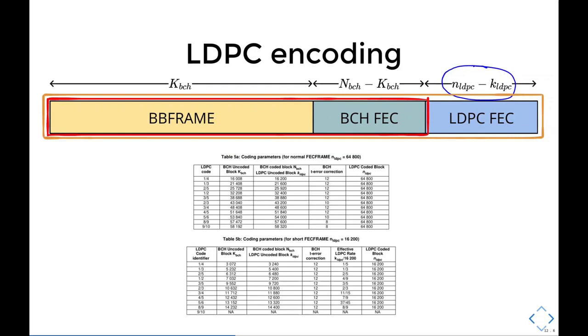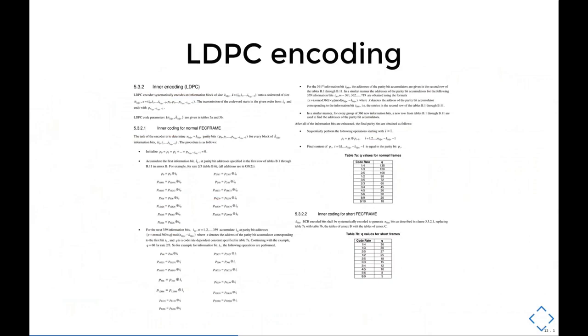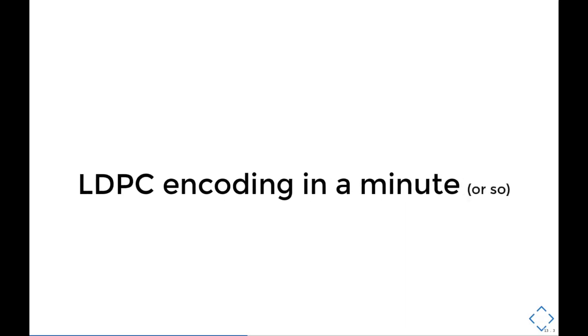The LDPC encoded block size only depends on the frame size, but the size of the LDPC uncoded block, which by the way is the same as the BCH coded block, depends on both frame size and code rate. This is the text for the encoding process as it appears in the spec, but I figure it might be maybe a little too boring if I just read this. So what I'll try to do instead is show you how the process looks like in a minute or so.